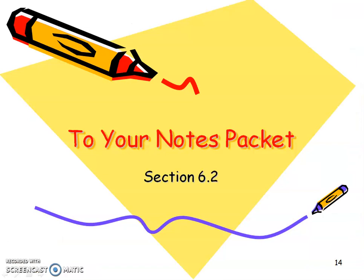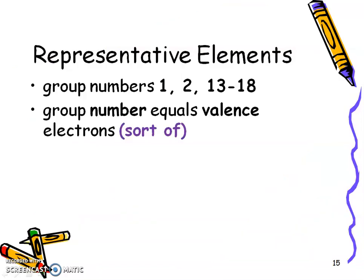So to your notes packet. Pause the video, make sure to fill in the blanks, and then play to hear my words. So we want to remember that these representative elements are really a unique way of telling us the number of valence electrons. And I say sort of, because we know that group 1 and 2 have 1 and 2 valence electrons,